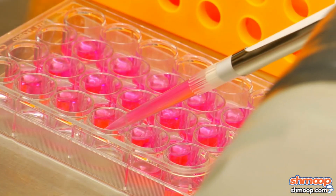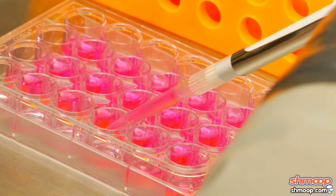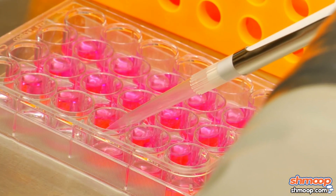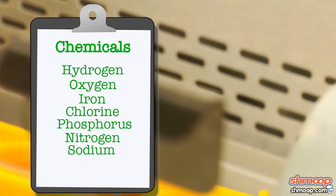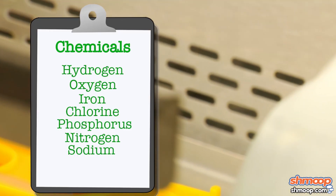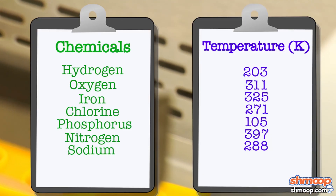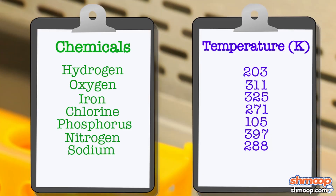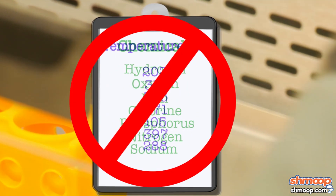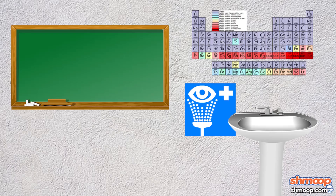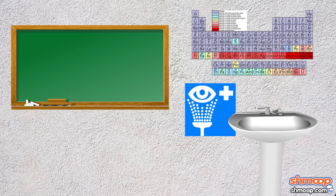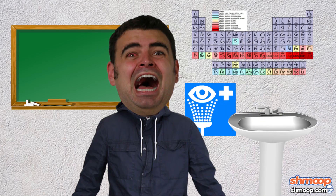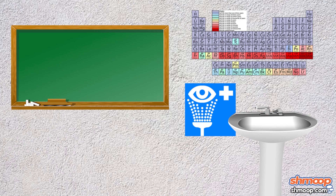If you're dealing with chemicals that react with one another at a certain temperature, you're going to focus just on the types of chemicals, or just on the temperatures, but not both. Either way, please try to keep some focus on the actual chemicals, and don't forget where the eyewash station is, just in case.